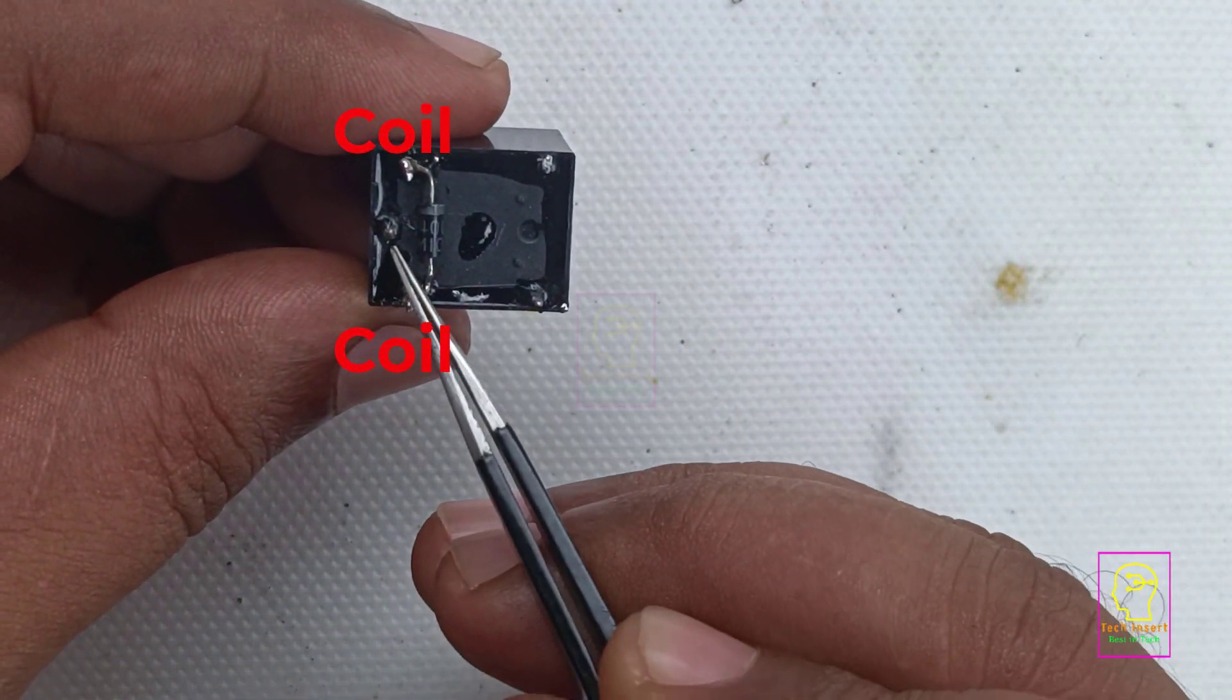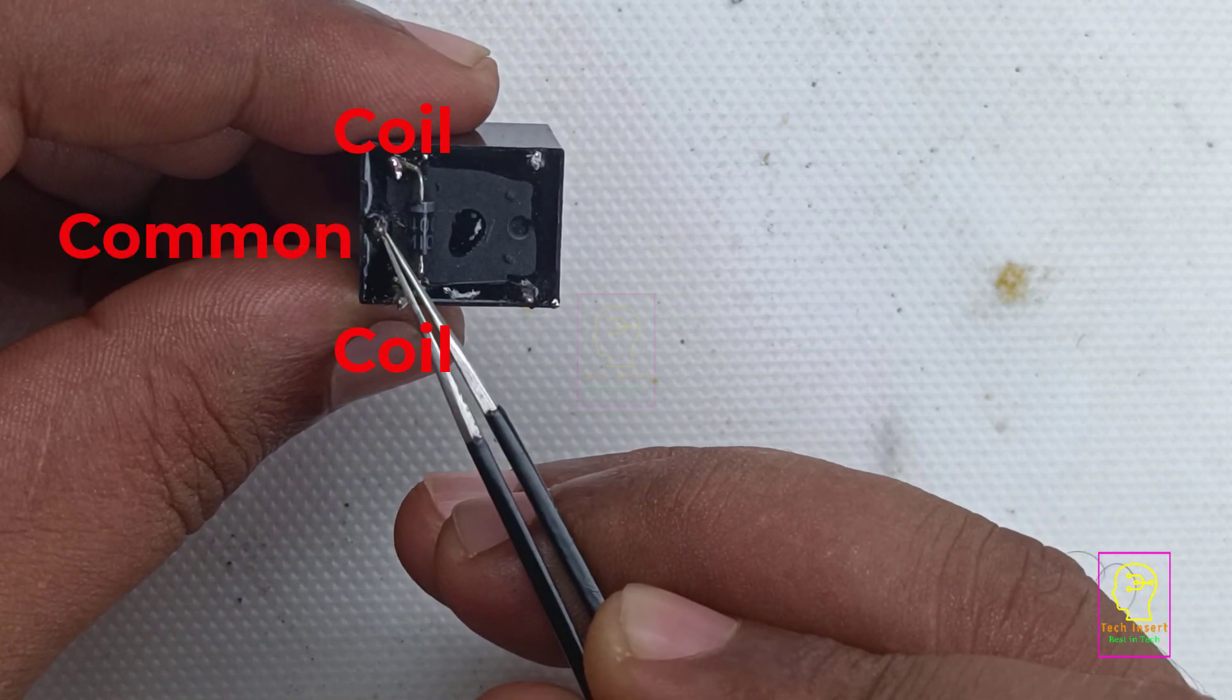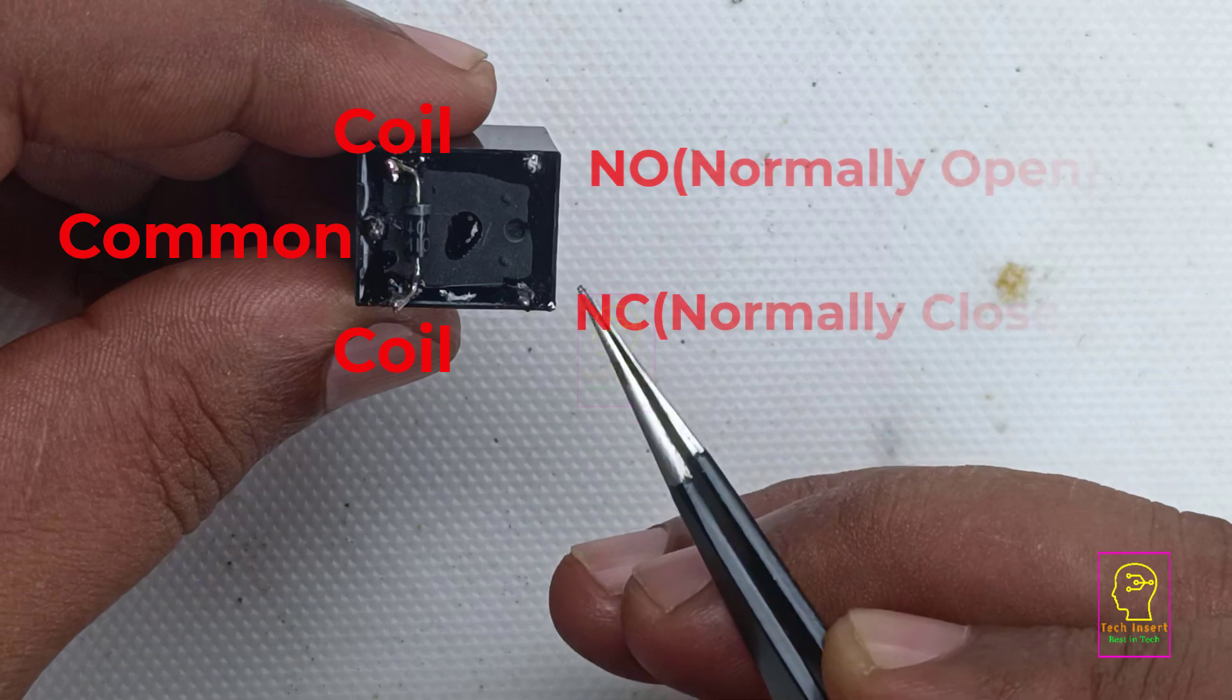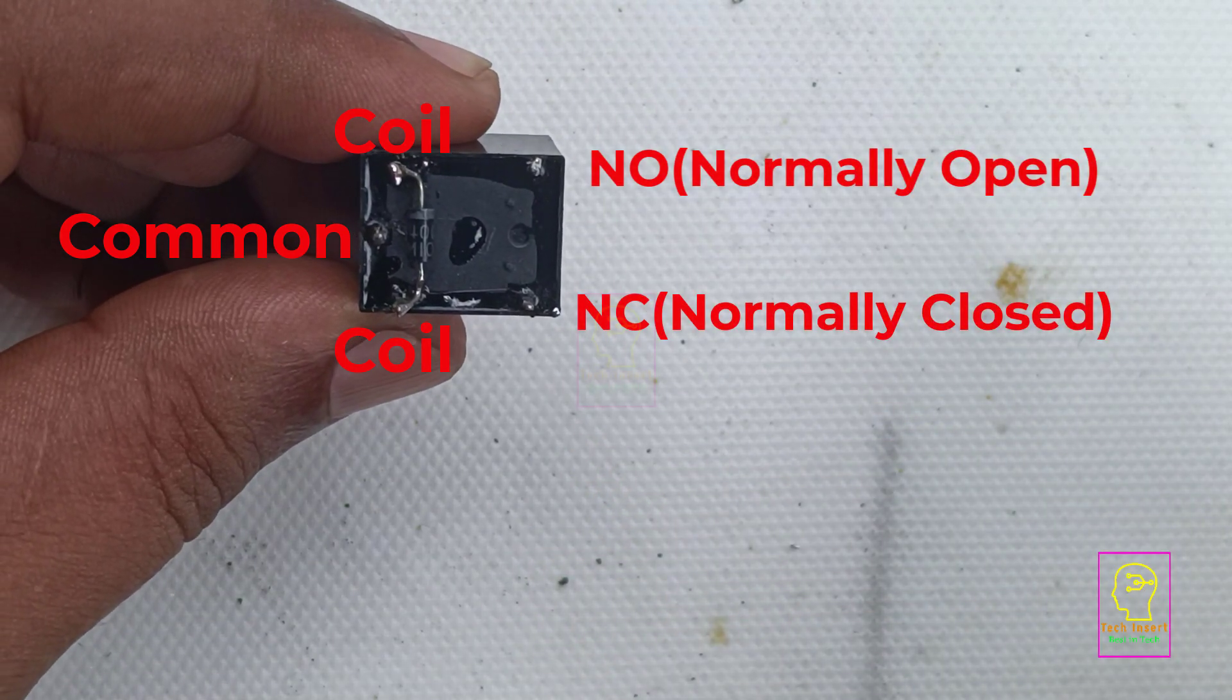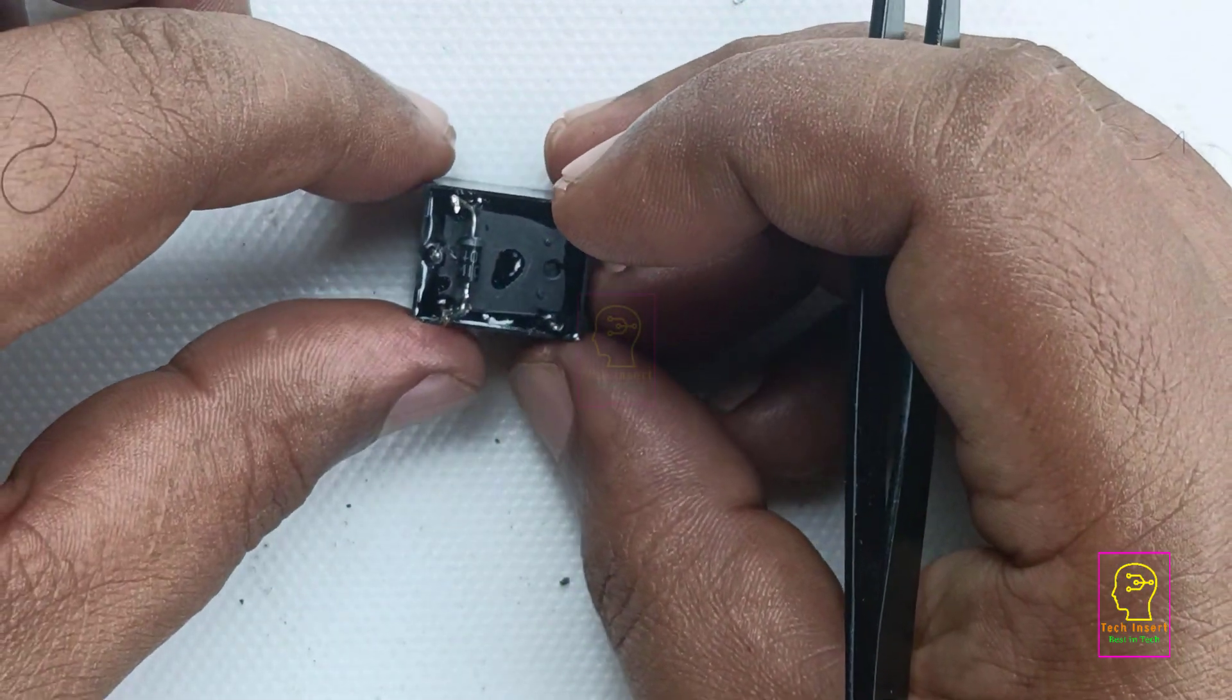Let's look into the pin details of the relay. These two are coil terminals, and this one is the common terminal, this is normally open, and this is normally closed. There is no connection between the coil and the other three terminals.